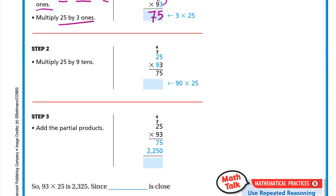Step 2: multiply 25 by 9 tens, which is 90. In the second line we write 0 in the product first, then multiply 25 by 9. 9 times 5 is 45 — write 5 down and carry 4 up. Then 9 times 2 is 18, plus 4 is 22. So we get 2,250.